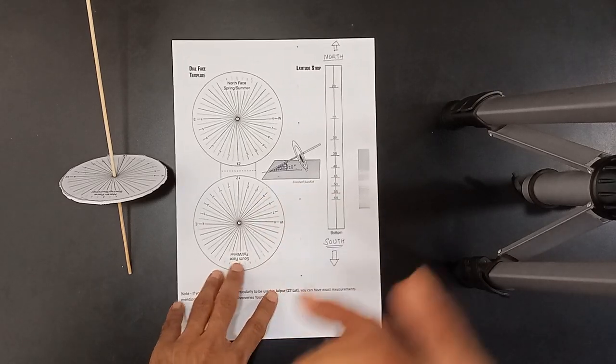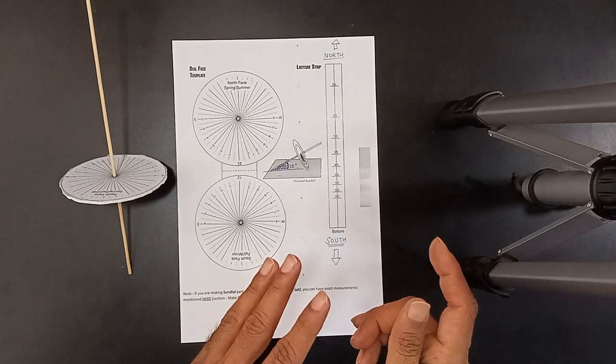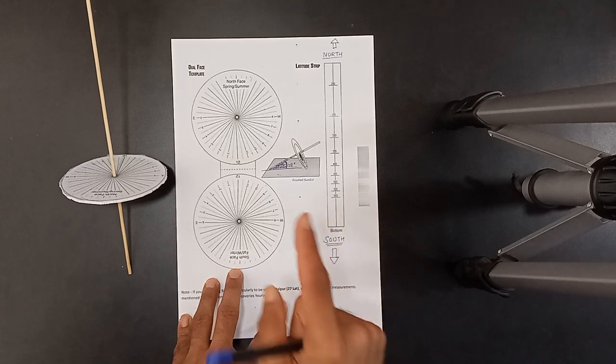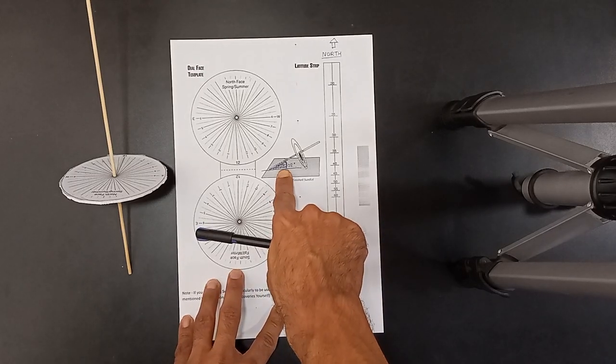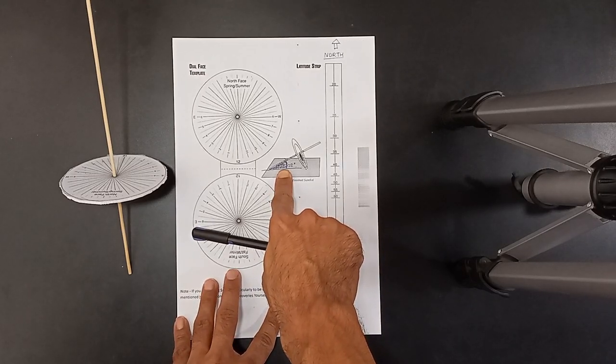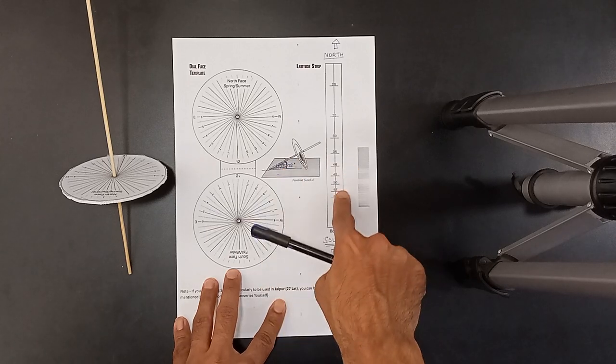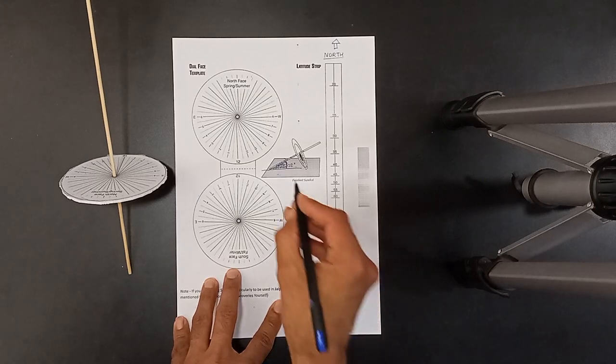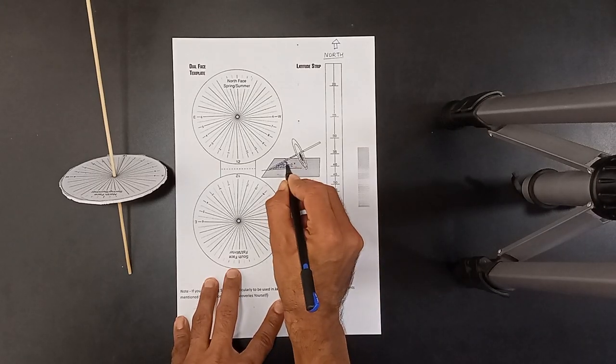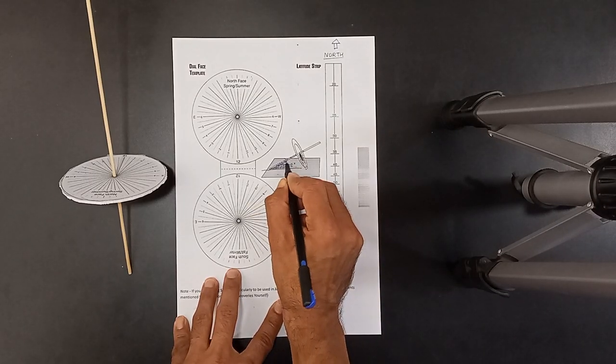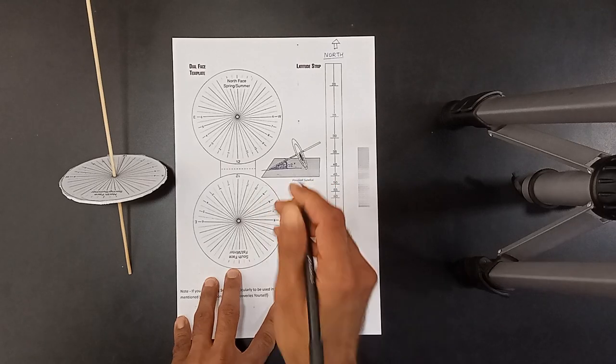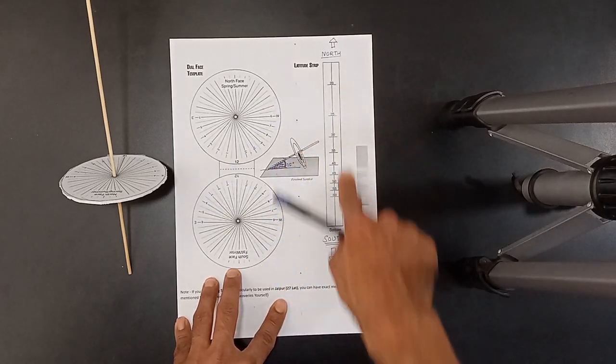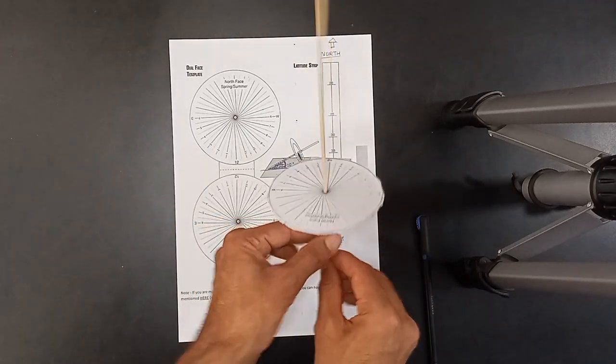So even if you do not have this strip, you still have a protractor with you which you can use to tilt it appropriately based on latitude of your place. So you're not completely dependent on this strip. This is just for assistance. The main philosophy, the main idea, is to tilt this stick with an angle equal to the latitude angle of your place. Do that and you won't need this.